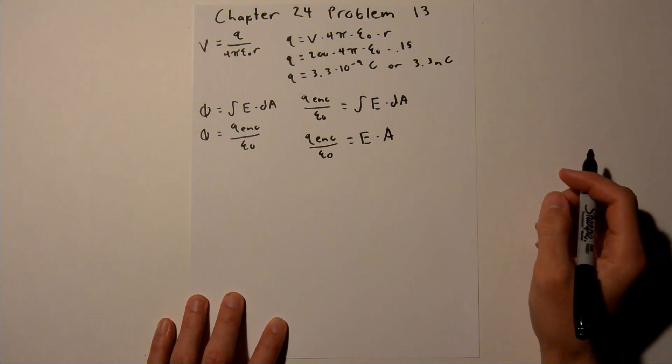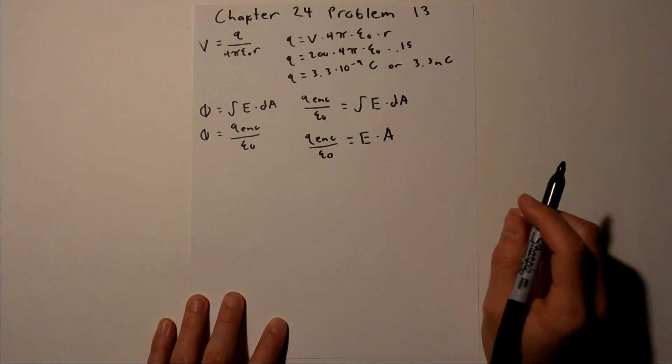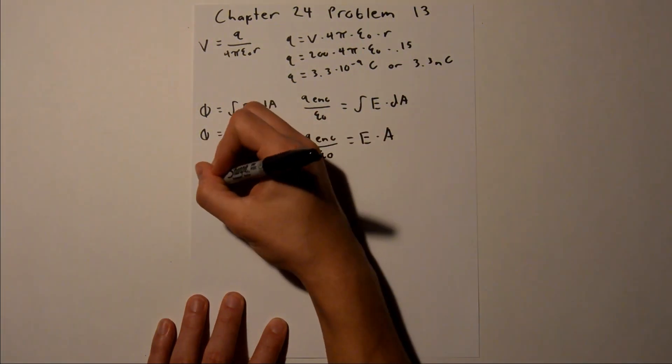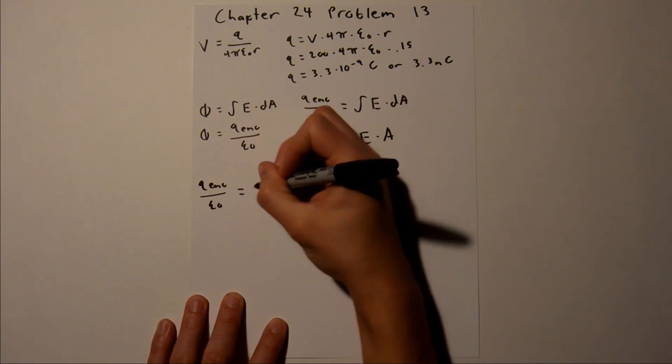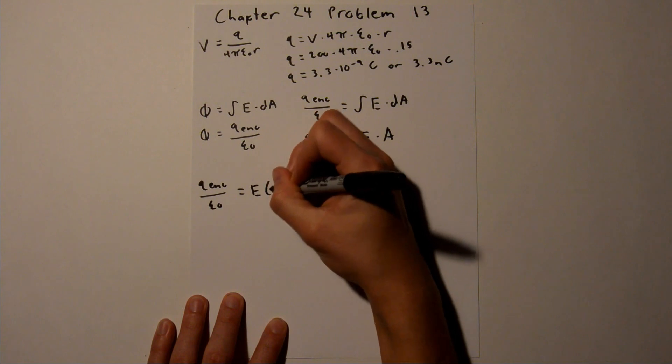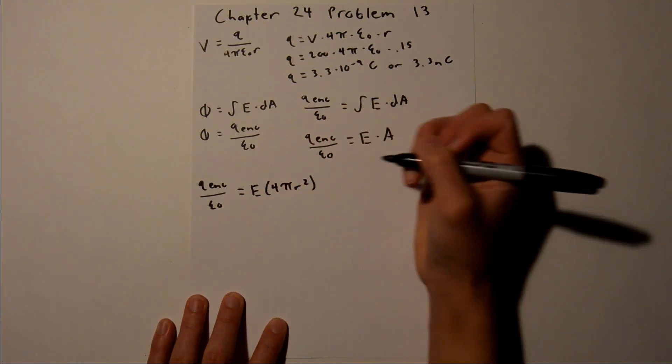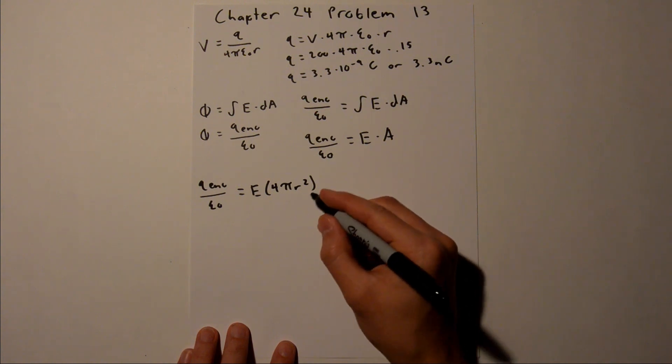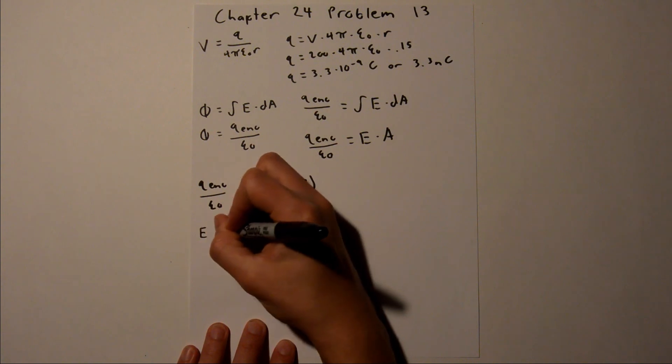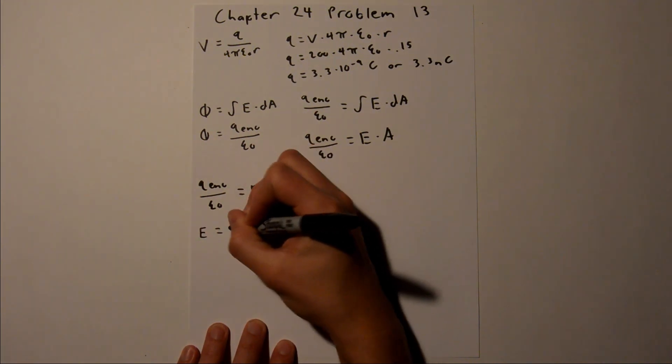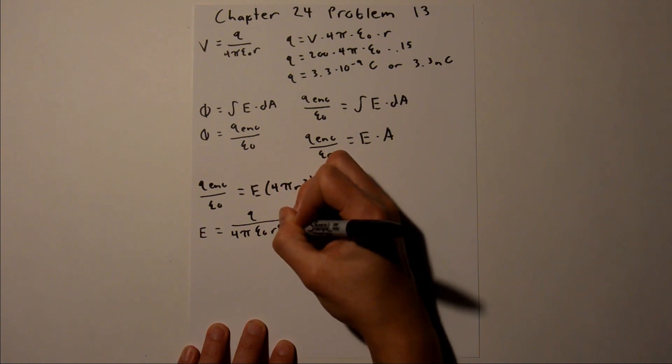And since we were talking about a sphere, we know that the area, or the surface area, is 4 pi r squared, so we can sub that in. So q enclosed over epsilon sub 0 is equal to the e field times 4 pi r squared. And we need to solve for e, so we can divide both sides by 4 pi r squared, and we will get e equals q over 4 pi epsilon sub 0 r squared.